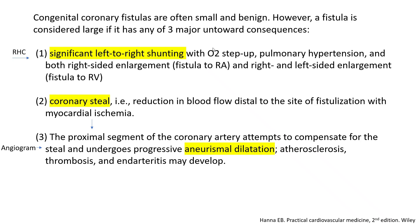In sum, this is how a large fistula is defined according to its three major hemodynamic consequences. One is left-to-right shunting with O2 step up on right heart cath. Two, you have aneurysmal proximal dilatation. And three, you have the coronary steal phenomenon, which explains the aneurysmal dilatation, and which you can document on stress testing.